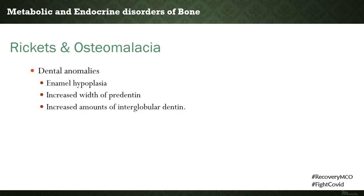Rickets and osteomalacia are metabolic disorders of the bone related to deficiency of vitamin D, which is related to normal maturation of bone. Vitamin D deficiency in early childhood results in rickets, while deficiency during adult life results in osteomalacia. In both conditions, there is decreased uptake of calcium from the intestine. The decreased calcium level results in multiple bony abnormalities. In relation to the teeth, it results in dental anomalies such as enamel hypoplasia, increased width of predentine, and increased amount of interglobular bone.